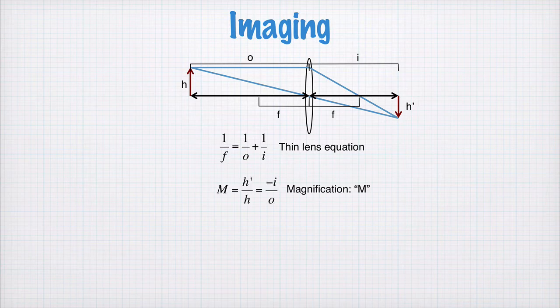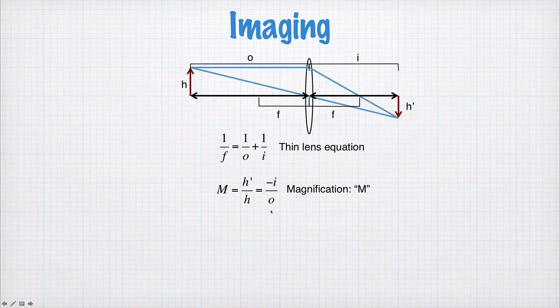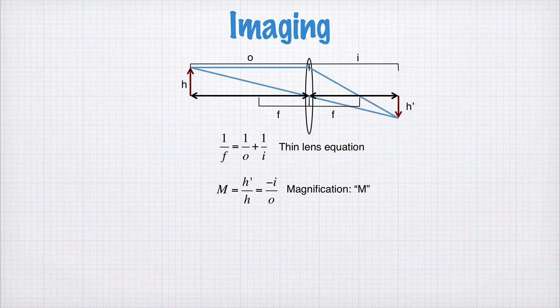The magnification of a lens is defined as the ratio of H dashed to H. So, if H dashed is larger than H, the magnification will be greater than one. The magnification also has a sign. So here, H is positive and H dashed is negative. So the magnification in this case will be negative.